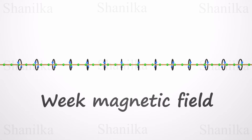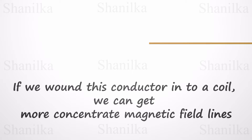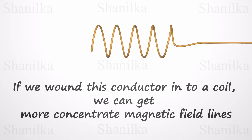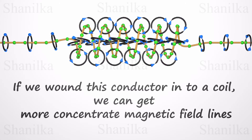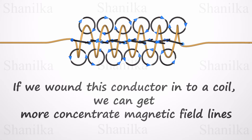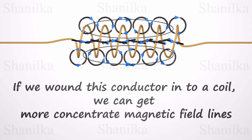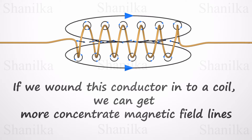A single straight conductor wire only creates a very weak magnetic field. If we wind this conductor into a coil, we can get more concentrated magnetic field lines. In most cases, electromagnets are created in this way to strengthen the magnetic field. The magnetic field around a coil looks almost like the magnetic field of a bar magnet.